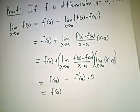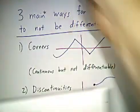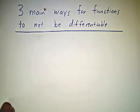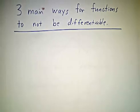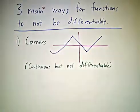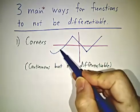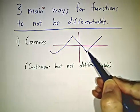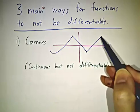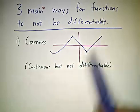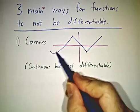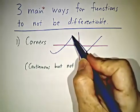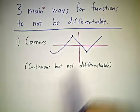Now with this theorem in hand, we can talk about the three main ways for functions to fail to be differentiable. There are other ways, but they don't come up very often. The first main way, which we saw with the absolute value function, is that some functions have graphs that have corners. They're heading up and suddenly they hit a corner and they're heading down, or heading down and suddenly hit a corner heading back up. These functions are continuous, but they're not differentiable — they're differentiable everywhere except at that point. There's no derivative at this point.